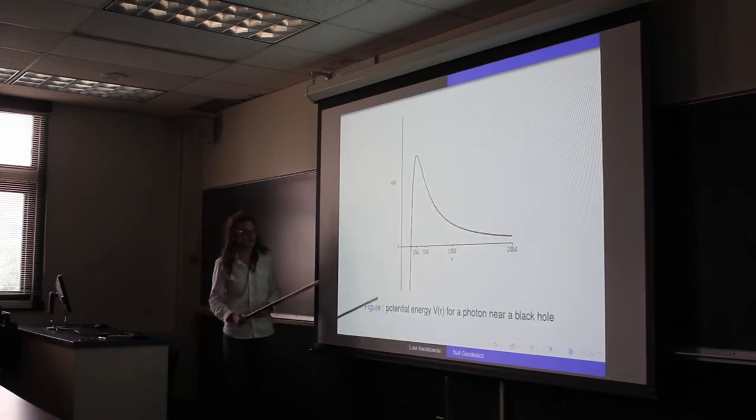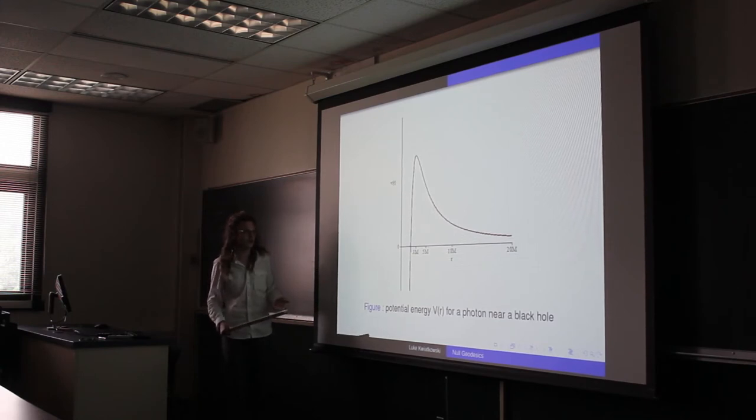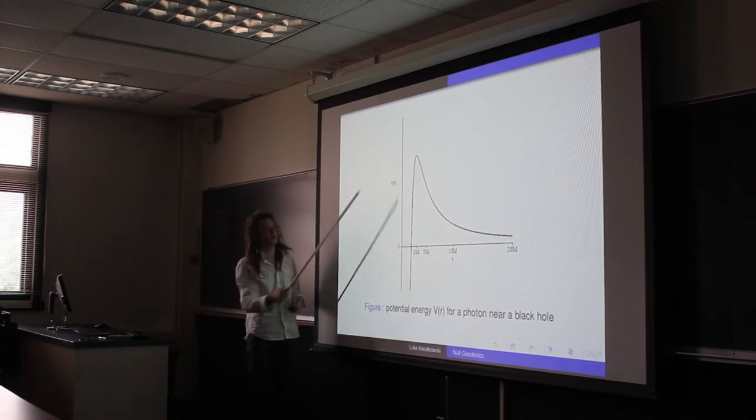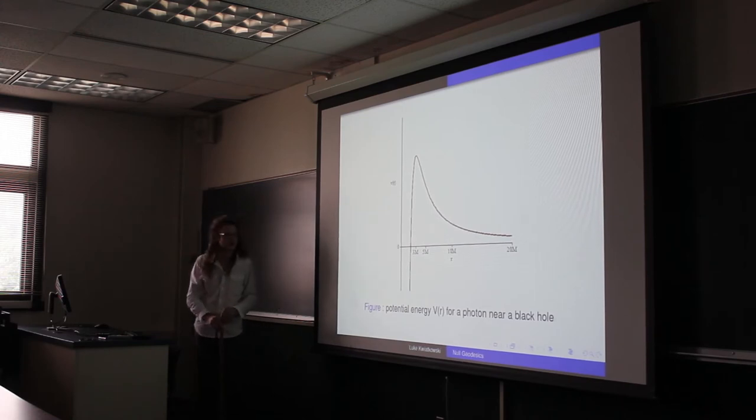So graphs like this help us understand the movement of the photon near the black hole. So here is actually an unstable orbit of the photon.